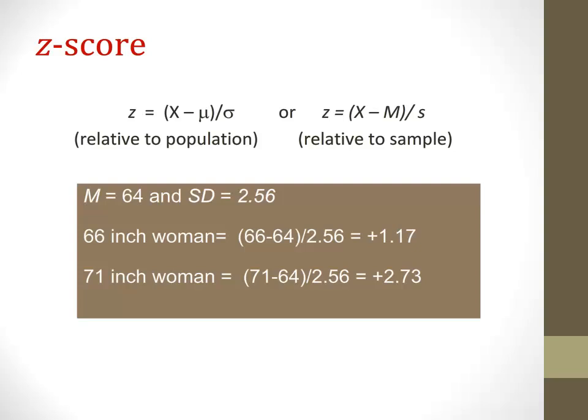Let's look at these two women's z-scores to see if our conclusion holds true. The woman who is 66 inches: calculating her z-score (66 minus the mean divided by the standard deviation) gives a z-score of 1.17, which by convention is not unusual or extreme. The woman who is 71 inches has a z-score of 2.73 — above 1.96 — so her height could be considered extreme.